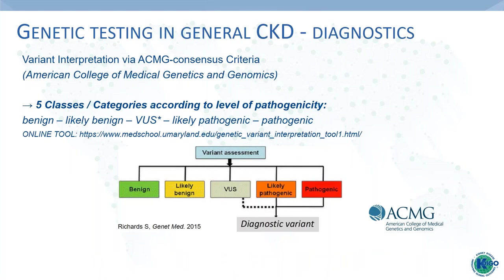The bottleneck of genetic testing nowadays is variant interpretation, because with big data and next-generation sequencing, we get a lot of variants that need to be interpreted. In 2015, the ACMG—the American College of Medical Genetics and Genomics—introduced more objective criteria to classify variants into one of five classes, ranging from benign to definitely pathogenic. These tools can also be manually accessed online: you can use those criteria, access variant criteria, and do your own assessment.